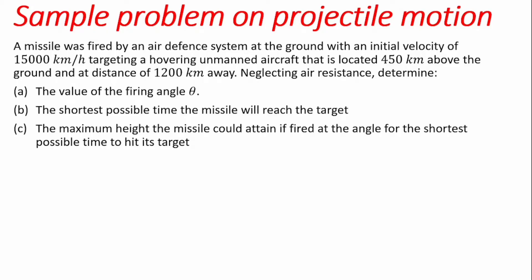The essence of this problem: when you want to fire at a particular aircraft from the ground, you need to know the precise angle with which you would fire such that you will hit your target, and you want to do that in the shortest possible time. You also want to ensure the missile does not go too fast and enter space, because in space the value of gravity may differ.